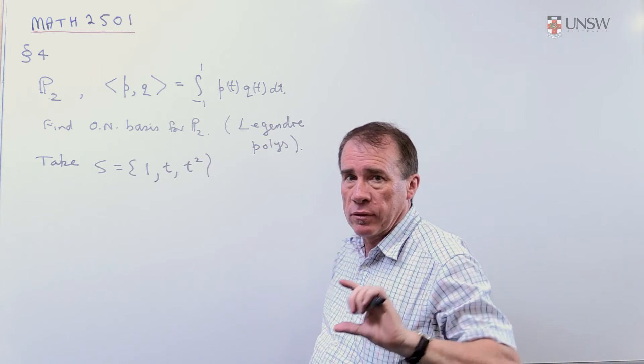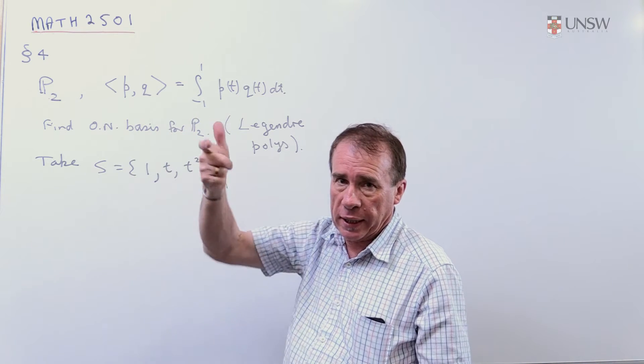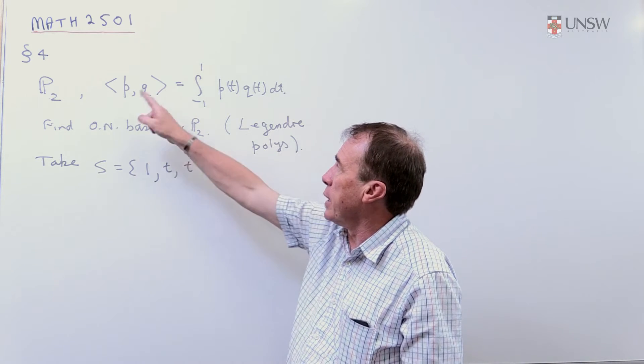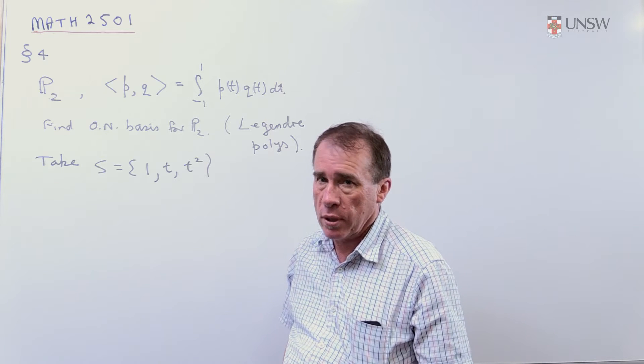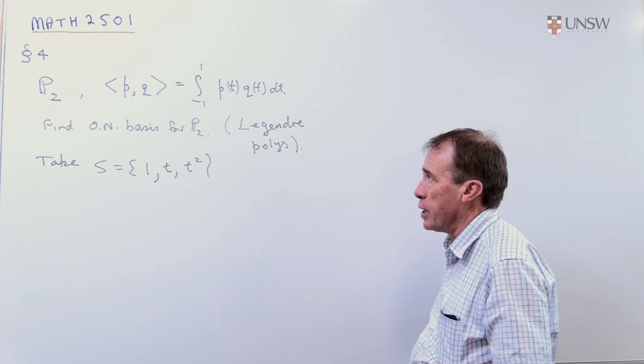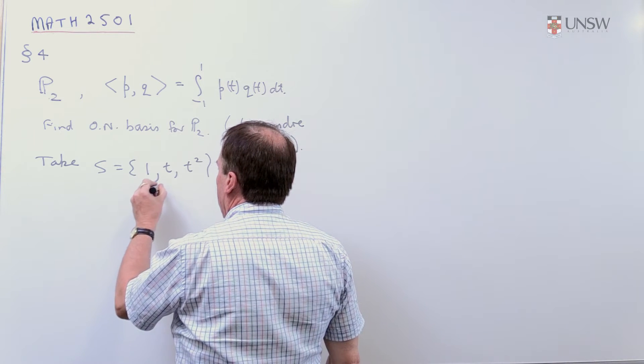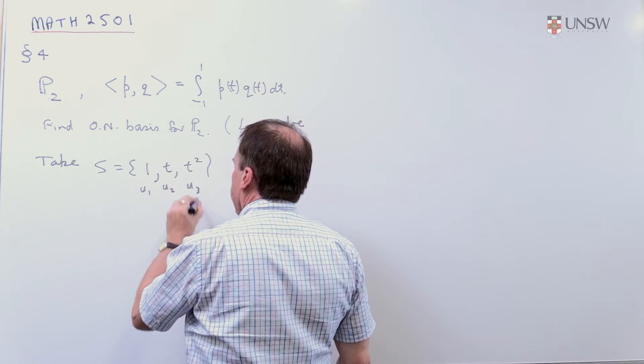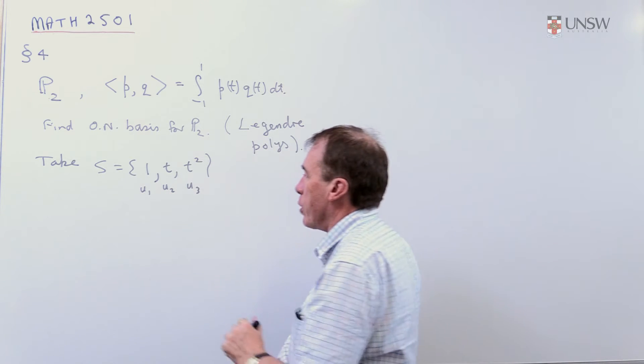So when we take, instead of taking dot products now, we're going to be taking inner products. Instead of taking lengths, we're going to be taking the inner product of something with itself and then taking the square root. So just be careful about the notation here. So I'm going to call this one U1, U2, U3, just to get some notation going.